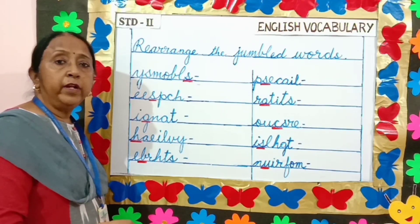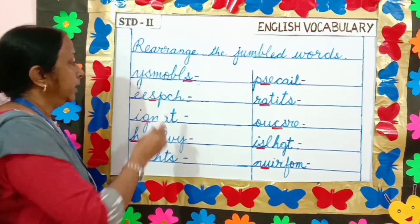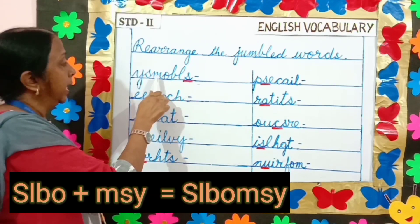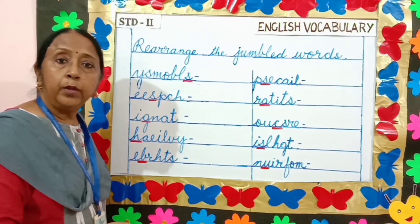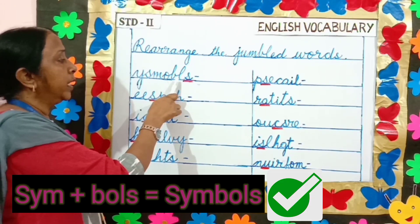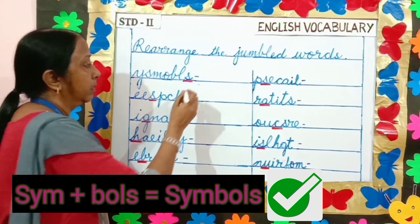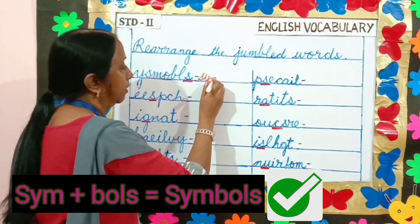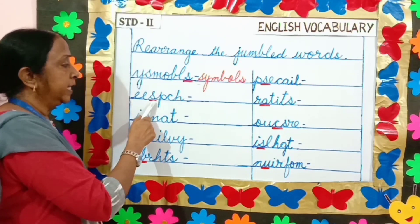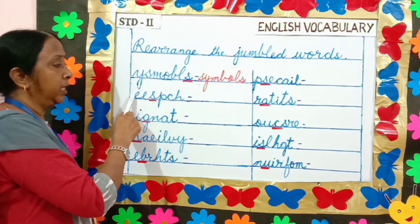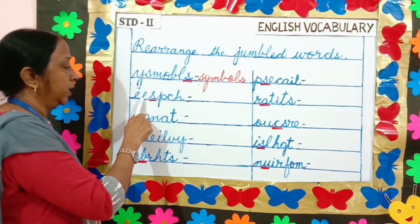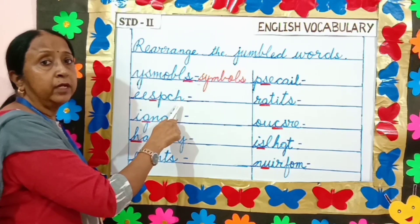To solve this question, we will form two groups in each word. For example, if I say S-L-B-O and M-S-Y, this word has no meaning. But if I say S-Y-M and B-O-L-S, we get the word 'symbols'. Next one: S-H-C and P-E-E has no meaning, but if I say S-P-E-E and C-H, we get the word 'speech'.